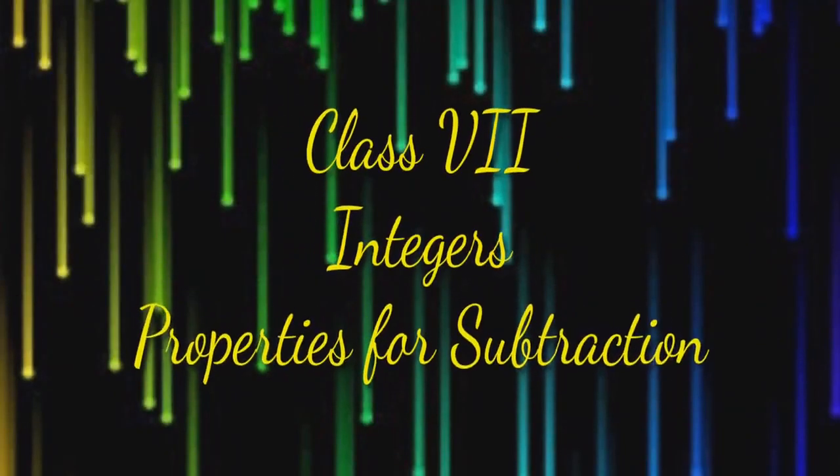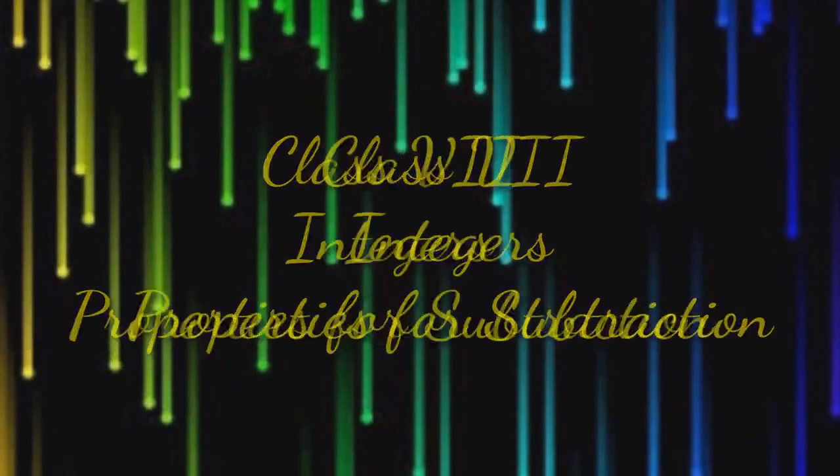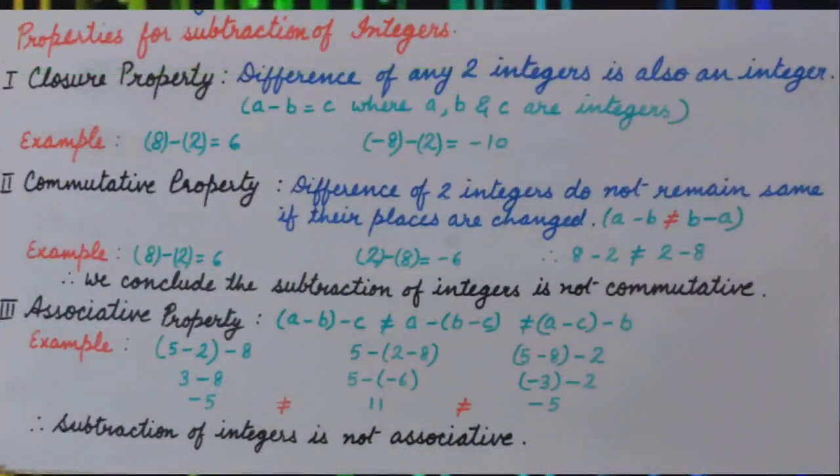Greetings of the day my dear students. Let's resume our chapter integers. Properties for subtraction of integers. First property is closure property. Difference of any two integers is also an integer.